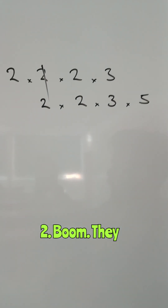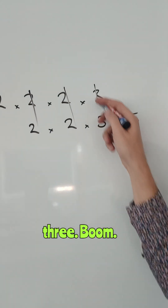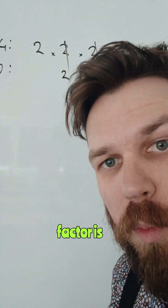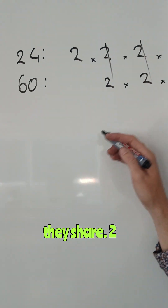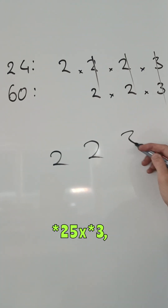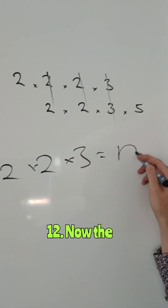They share a 2. They share another 2. They share a 3. So that's the highest common factor — everything they share: 2 times 2 times 3, which gives me 12.